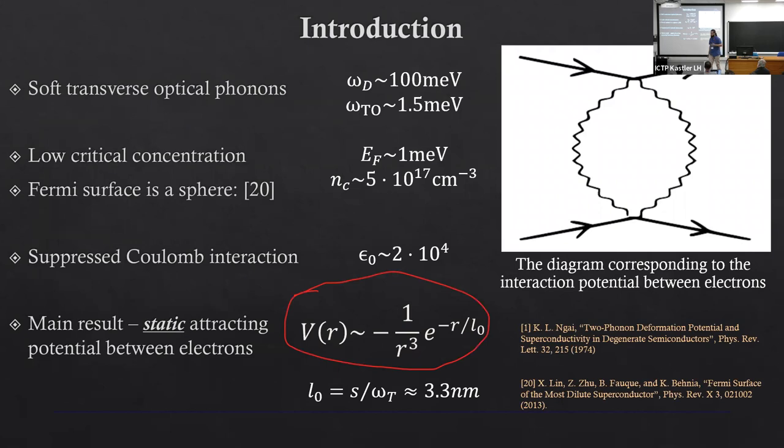I will briefly go through the main properties that will be important for us. There are two main interesting things. First, it is paraelectric, but it is close to the paraelectric transition. And as a result, it has a tiny gap in the spectrum of transverse optical phonons, a large dielectric constant around 20,000, and the Coulomb interaction is suppressed.